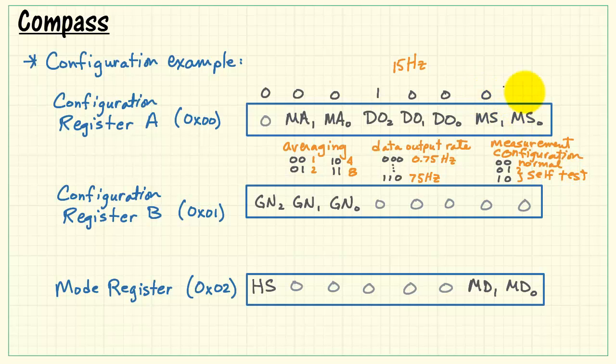And here's a specific example of 15 Hz, averaging only one sample per measurement, and using normal mode. Therefore, we need to write hexadecimal 10 to address 0.